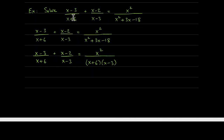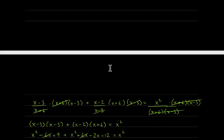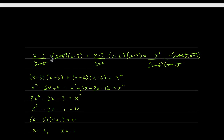In this question we again have to factor the denominator before proceeding. Factoring gives x plus 6 times x minus 3. Looking at all three denominators, we have x plus 6, x plus 6, x minus 3, and x minus 3, so the LCD is x plus 6 times x minus 3. Multiplying each term by the LCD: x plus 6 cancels here, x minus 3 cancels there, and everything cancels in the last term.